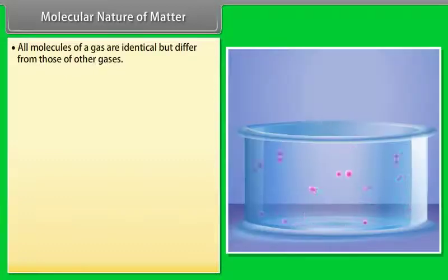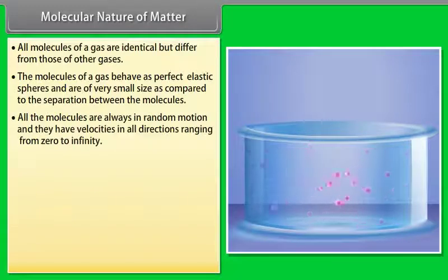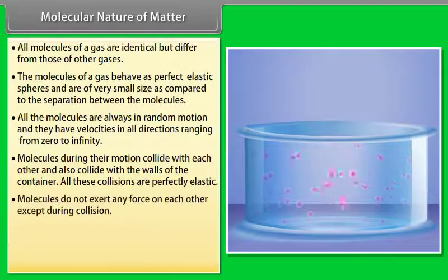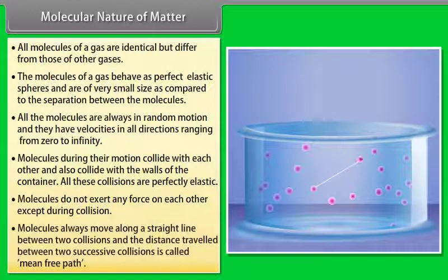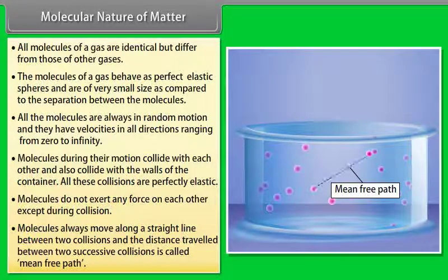Molecular nature of matter: All molecules of a gas are identical but differ from those of other gases. The molecules of a gas behave as perfect elastic spheres and are of very small size as compared to the separation between the molecules. All the molecules are always in random motion and they have velocities in all directions ranging from zero to infinity. Molecules during their motion collide with each other and also collide with walls of the container. All these collisions are perfectly elastic. Molecules do not exert any force on each other except during collision. Molecules always move along a straight line between two collisions and the distance travelled between two successive collisions is called mean free path.